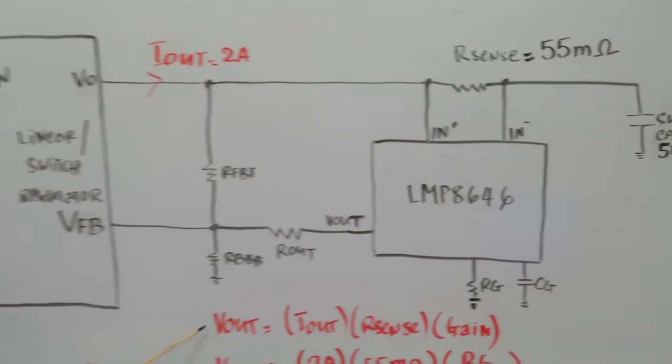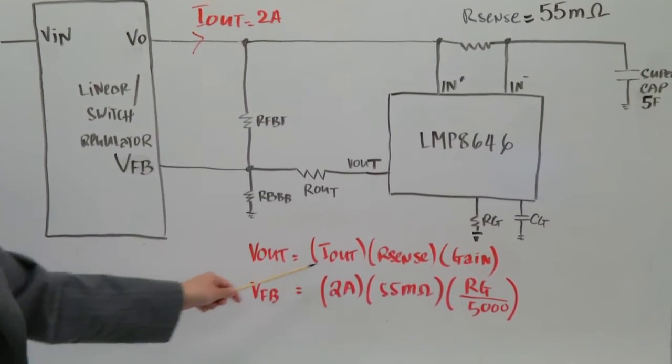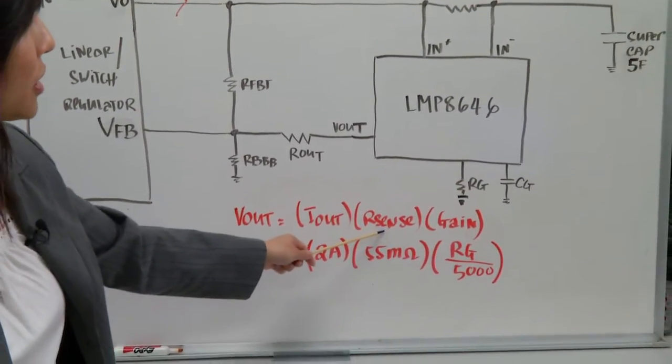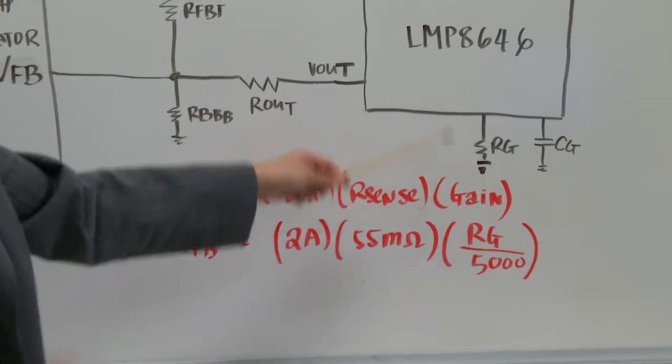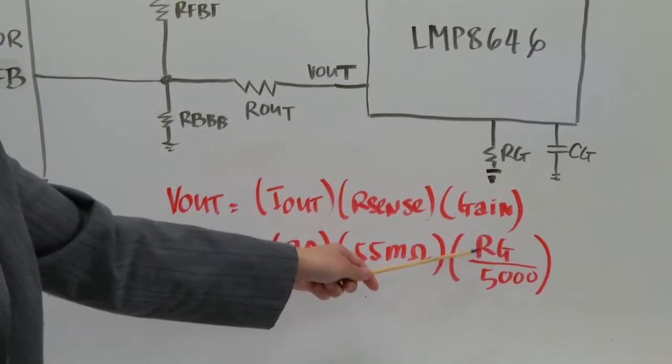And I've written out that equation here. So Vout equals Iout times Rsense times gain. And for the LMP8646 the gain is just Rg divided by 5000.